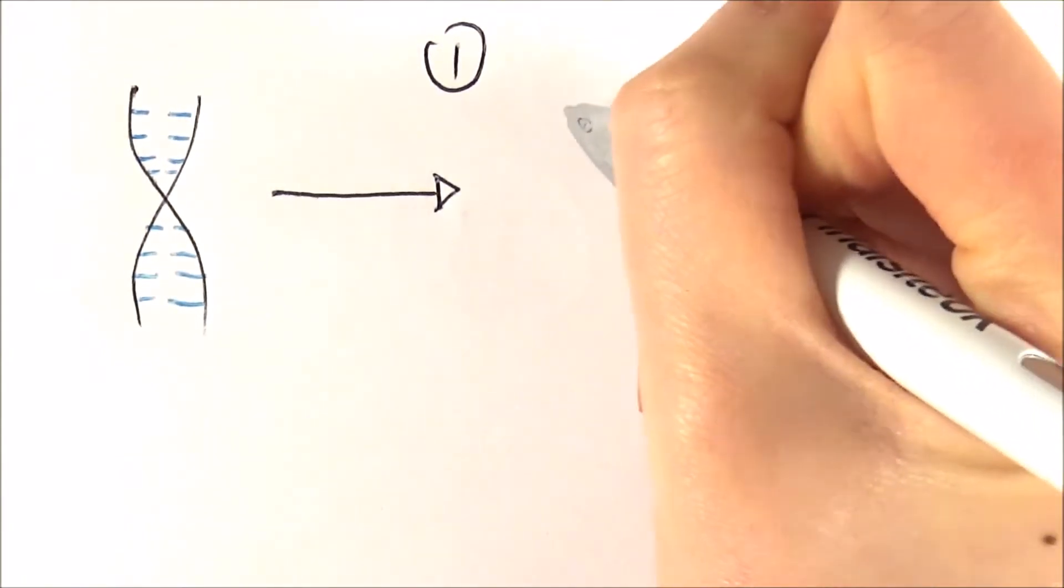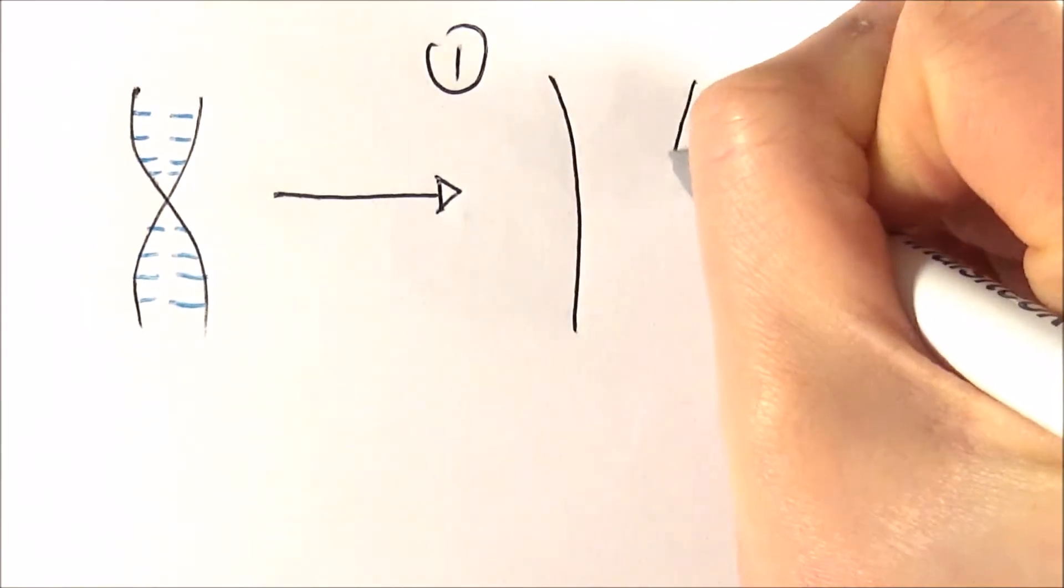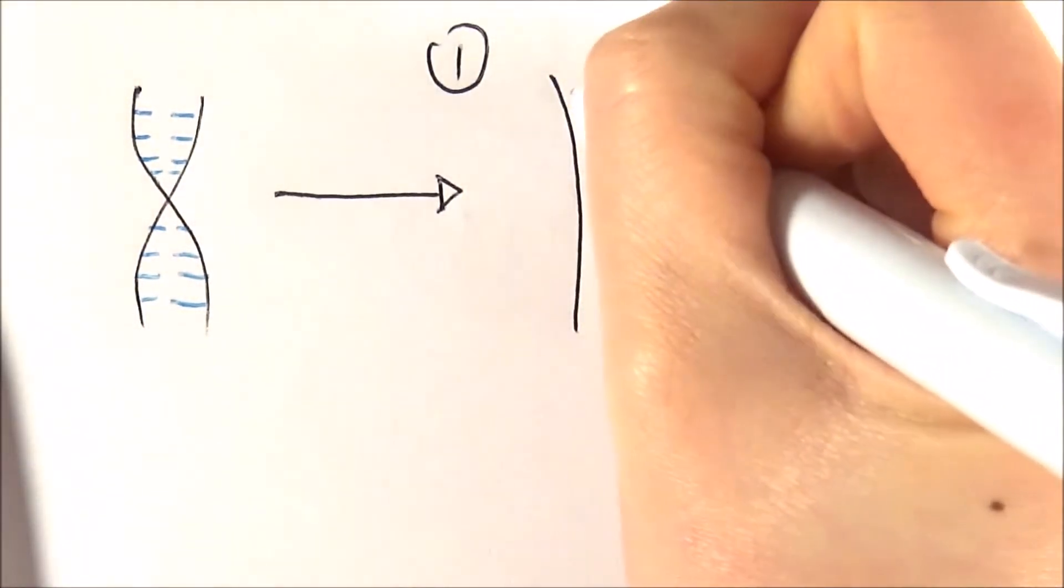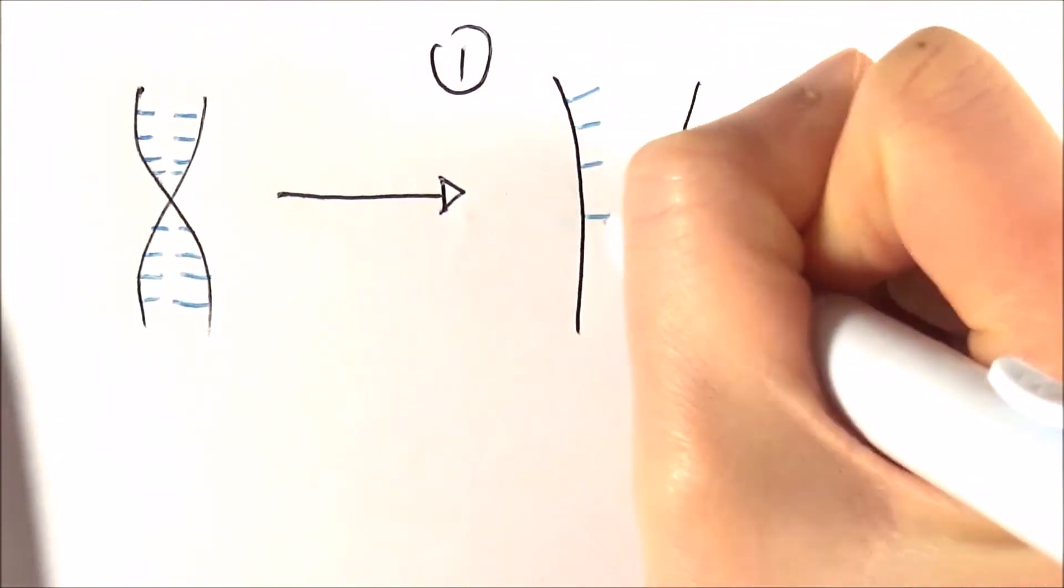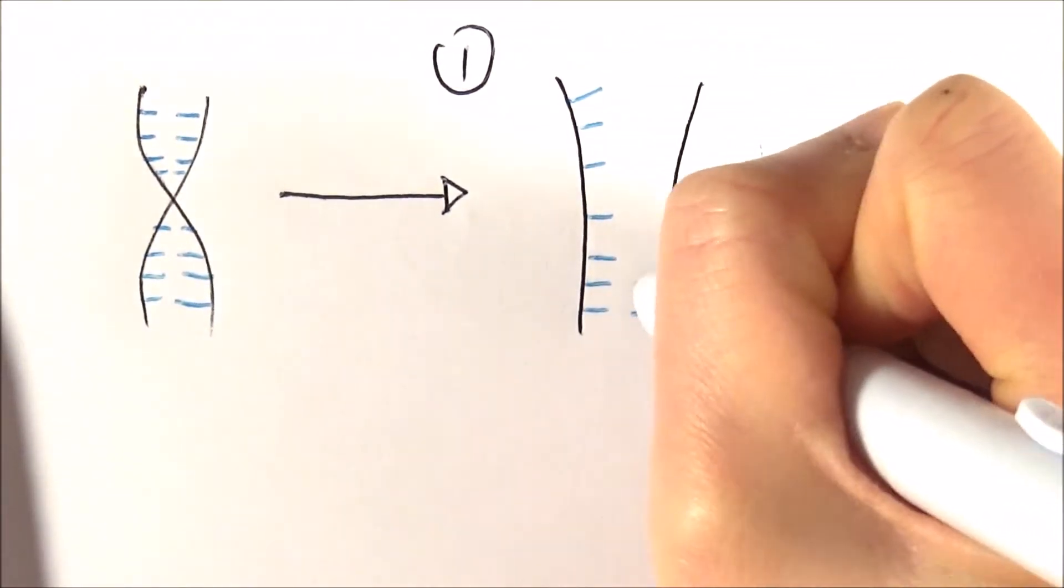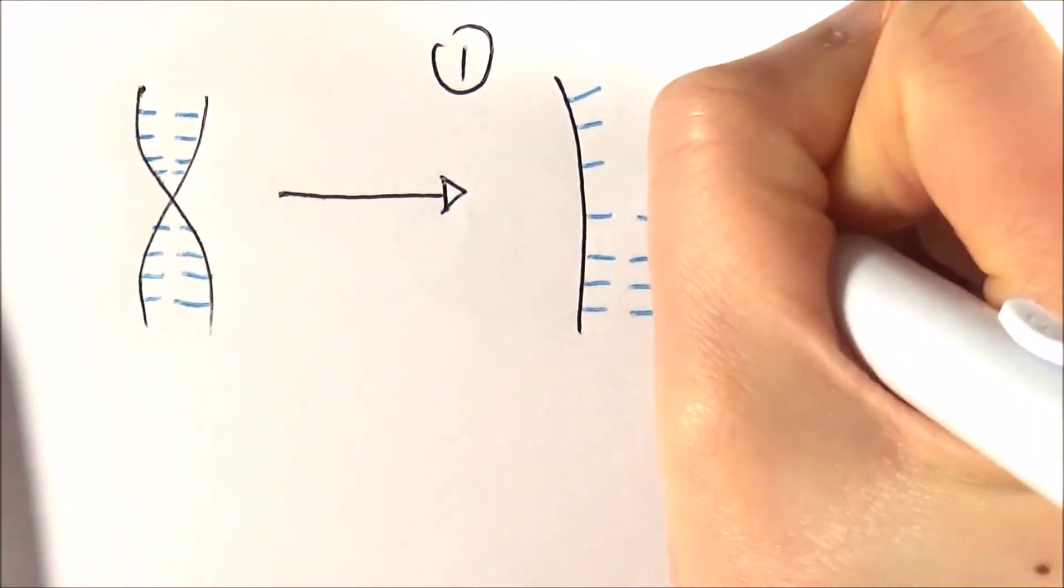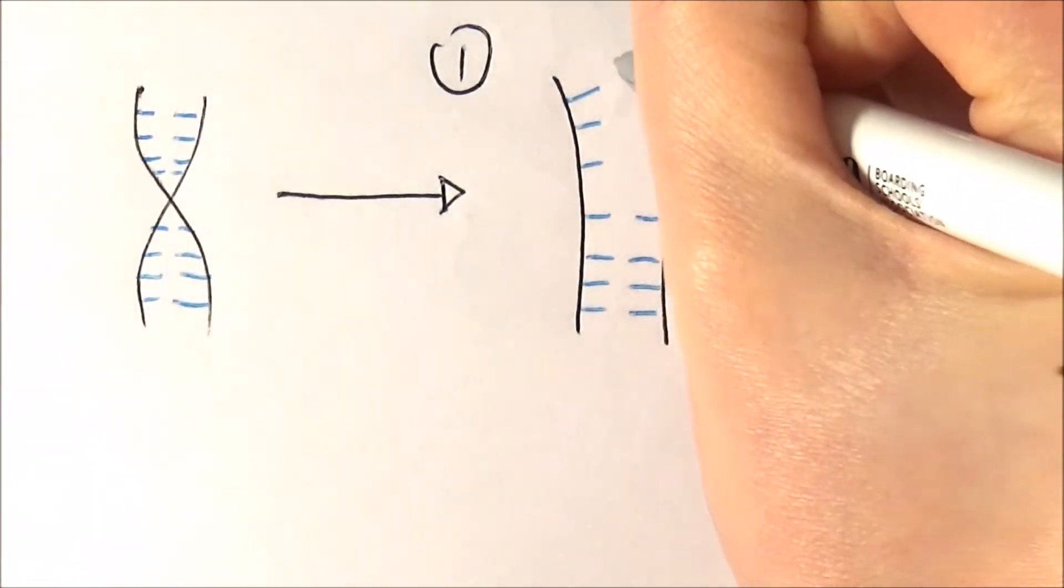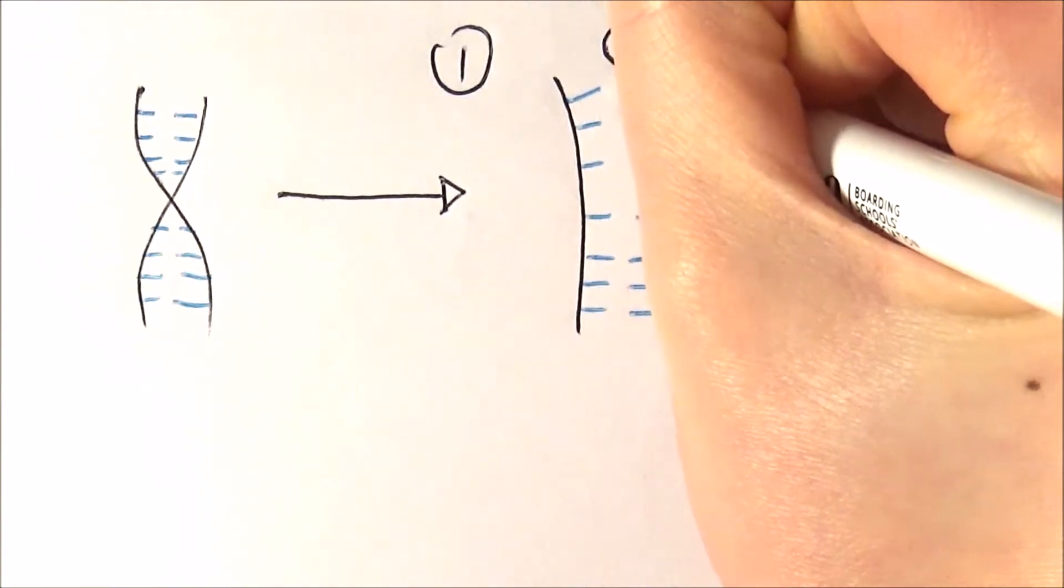The DNA unwinds so it becomes parallel, and the hydrogen bonds break in between so they are no longer joined together properly. This is due to the action of an enzyme called DNA helicase.